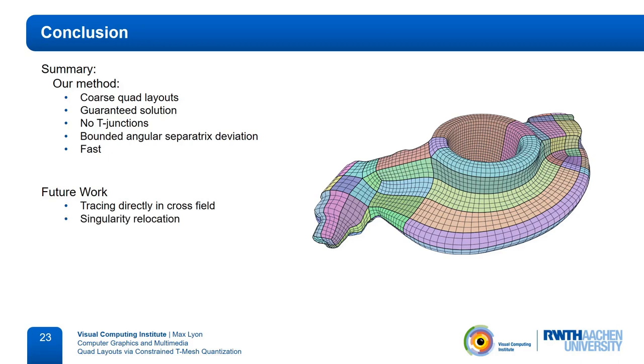Another opportunity for improvement could be the relocation of singularities in situations where the exact positioning is not important. Slightly moving the input layout vertices may move them into the valid region, which could lead to simpler layouts. Thanks for your attention.